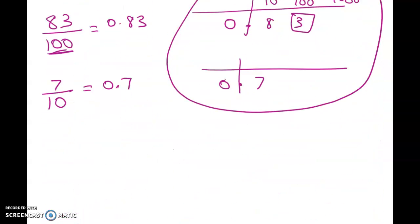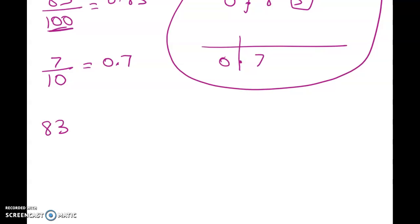The next example I was going to do was 831 over 100. We know that this one has got to be in my hundredths column and the 3 will be next to it in the tenths column, and then we're going to have 8 whole numbers.